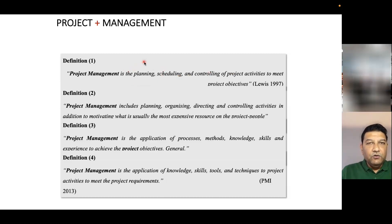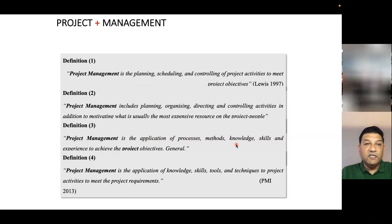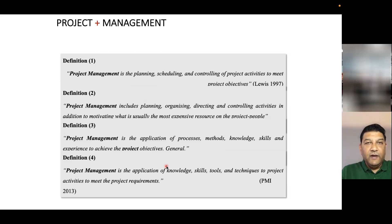Planning is done through work breakdown structure and sequencing the work. Sometimes planning and scheduling are used as synonyms. Another definition adds planning, organizing, directing, and controlling. A third definition states that project management is the application of process, method, knowledge, skills, and experience to achieve the project objective. All definitions converge on the same meaning: project management is the planning, controlling, and monitoring of any project or activity we are working on.